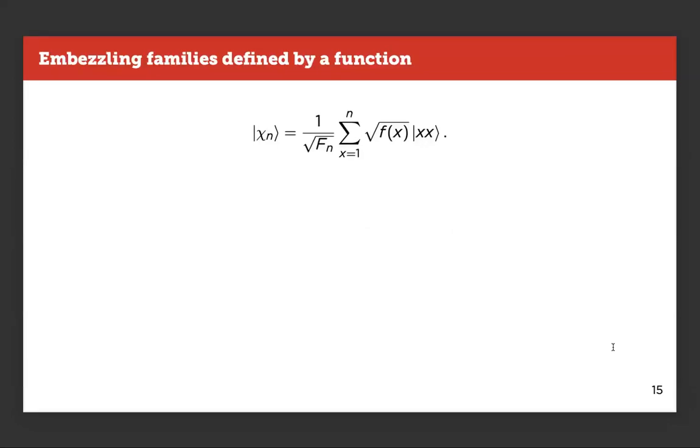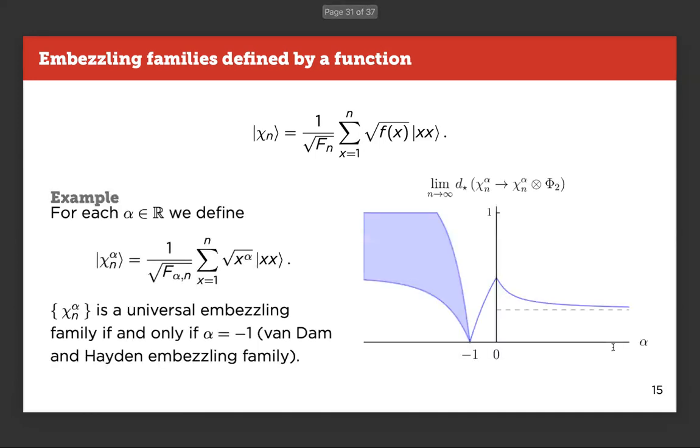The problem with the theorem is that, you know, we are talking about infinite families. And it may take me a very long amount of time to check all the states if there is no relation between one state and another. And so sometimes it's easier to talk about families that are defined by a function. So here you see every entry, every coefficient is somehow defined by this function f and the big F_n is just a normalization constant. As an example, we can take the...